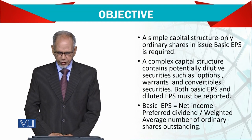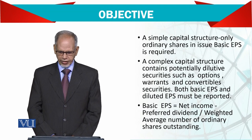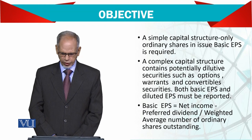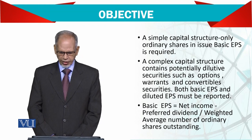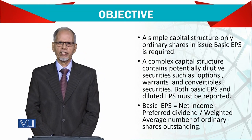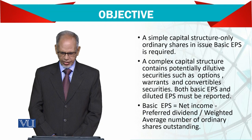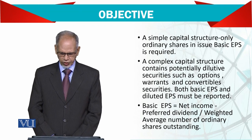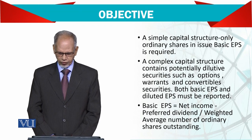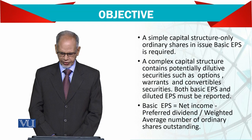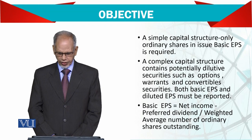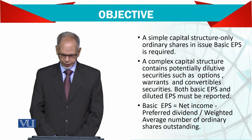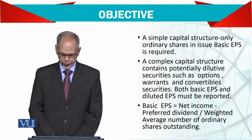A simple capital structure has only ordinary shares in issue, so only basic earnings per share is required. A complex capital structure contains potentially dilutive securities such as options, warrants, and convertible securities. In that case, both basic earnings per share and diluted earnings per share must be reported.